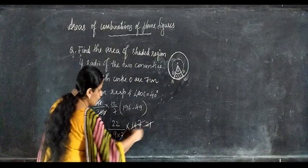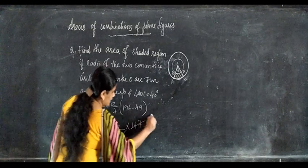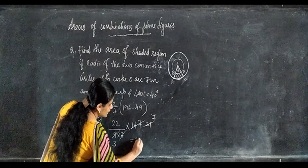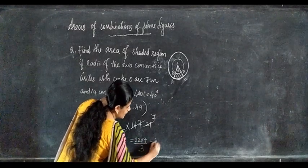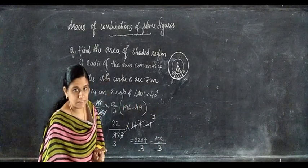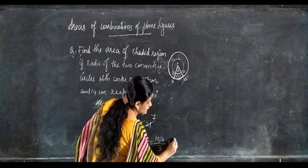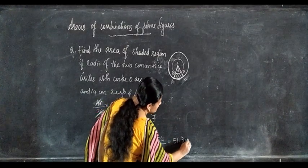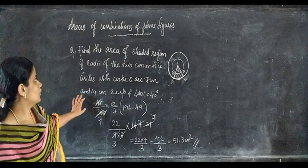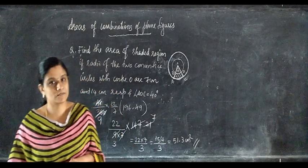Cancel 7 into 147 to get 21, then cancel 21 and 9 to get 3 and 7. So: 22 into 7 divided by 3, that is 154 divided by 3, which gives 51.3 centimeters square. Therefore, the area of the shaded region is equal to 51.3 centimeters square.